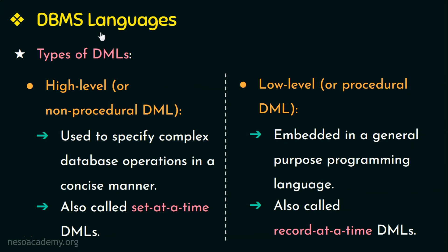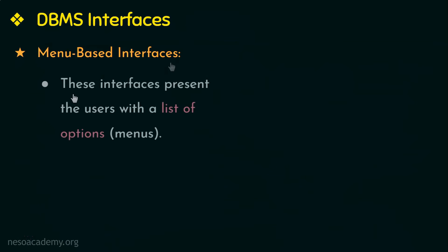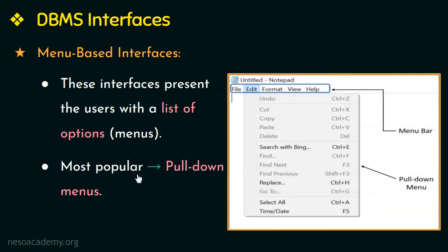So that covers the languages provided by DBMS: the Data Definition Language, Storage Definition Language, View Definition Language, and Data Manipulation Language. Next let us look at the different interfaces provided by DBMS. The first one is menu-based interfaces, which present users with a list of options called menus. Users send their requests by selecting one option from this list. A pull-down menu is one of the most popular techniques in web-based user interfaces.